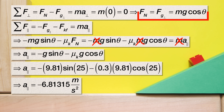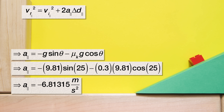Now we can use one of the uniformly accelerated motion equations to solve for the displacement of the block in the parallel direction. Velocity final parallel squared equals velocity initial parallel squared plus two times acceleration parallel times displacement parallel. Because we are talking about the maximum distance the block travels up the incline, the final velocity of the block is zero.